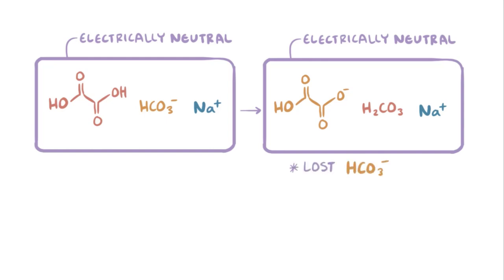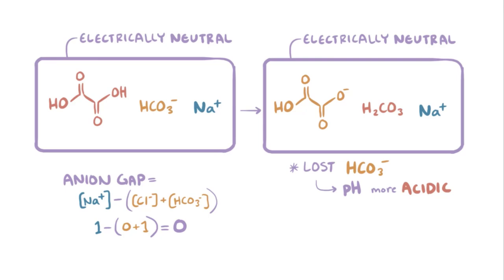We still lost a bicarbonate ion though, and this decreases bicarbonate's plasma concentration and shifts the pH towards the acidic range. If we remember our anion gap equation, we have sodium, which is the measured cation, minus chloride and bicarbonate, the measured anions. So on the left, you have one minus the sum of zero plus one, which is one minus one or zero. On the right side, we have one minus the sum of zero plus zero, since the organic acid is unmeasured, and so this equals one minus zero or one. So we see that even though we're still electrically neutral, our anion gap increases, and will be high in the cases of increased organic acids.